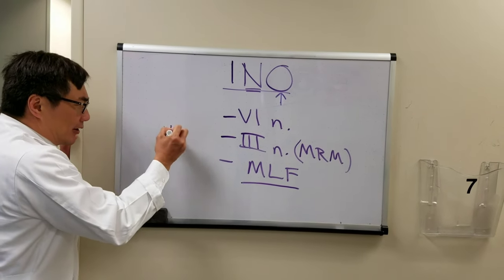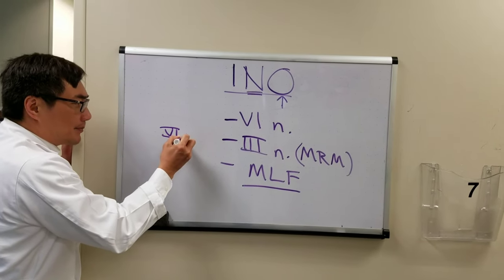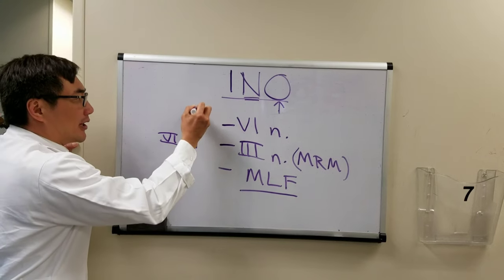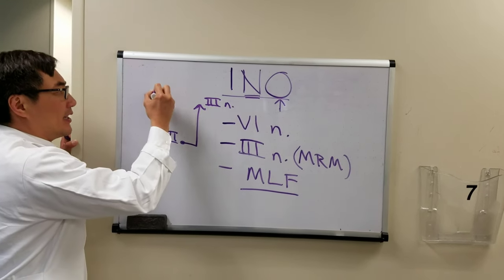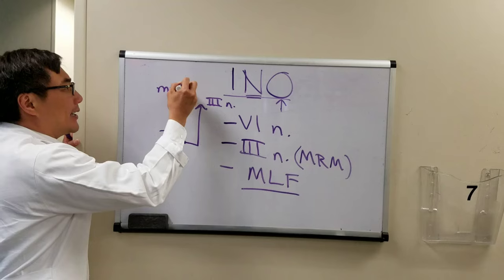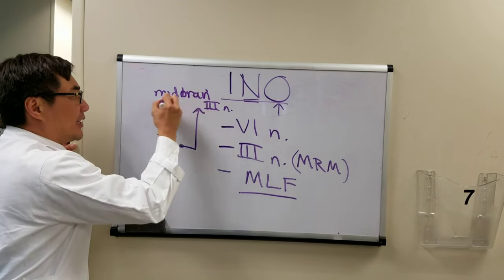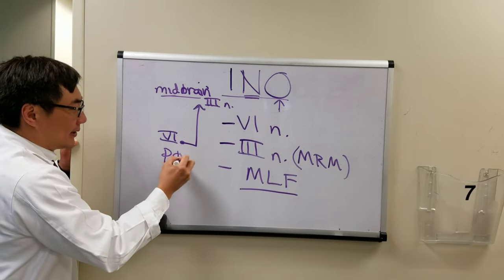The sixth nerve nucleus lives in the pons. It must talk to the contralateral third nerve nucleus, which lives in the midbrain. So the midbrain has three, and the pons has six.